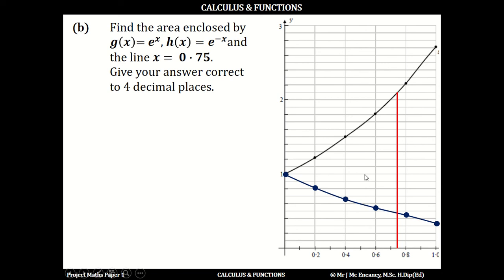This area is the integral from 0 to 0.75 of g(x) - h(x). The limits go from 0 to 0.75. We put g(x) first because it's on top, then subtract h(x). If you do it the other way, it would give a negative area. So we have e^x - e^(-x).